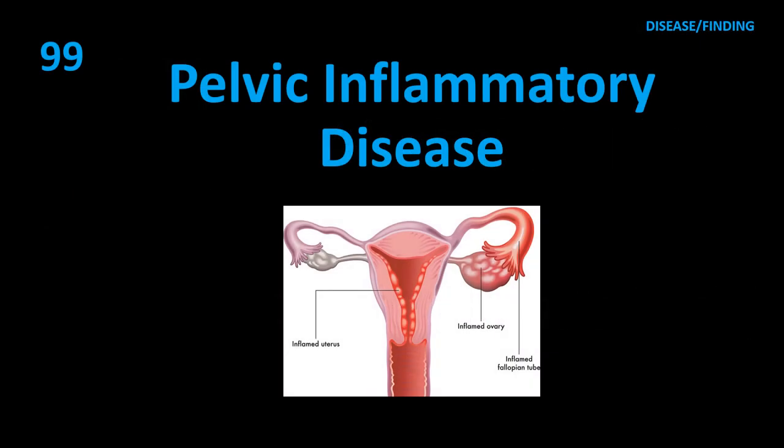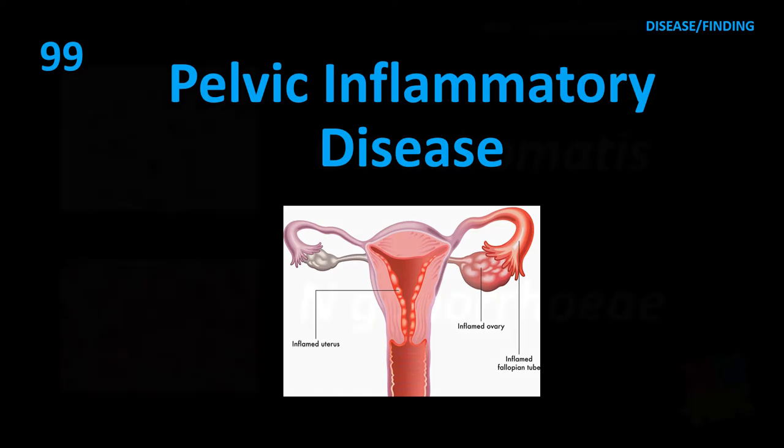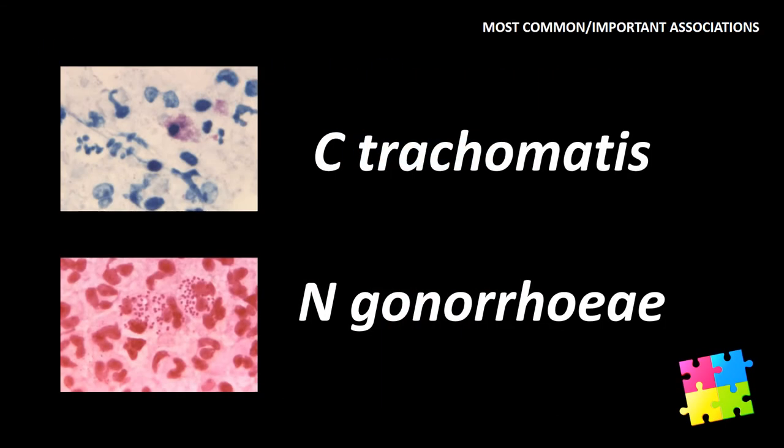Item 99: Pelvic inflammatory disease — Chlamydia trachomatis and Neisseria gonorrhoeae.